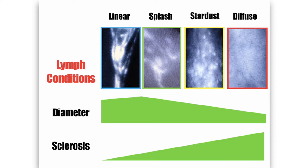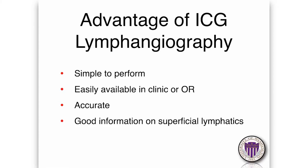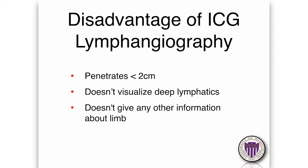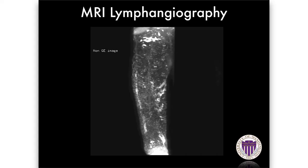These patterns indicate a reduction in the diameter of the lymphatic channels as well as an increase in sclerosis or scarring in the lymphatic channels. If you see somebody with a diffuse pattern, these patients are not going to be candidates for any type of lymphatic bypass, whereas somebody with a linear pattern will be a candidate. The advantages of ICG are that it's very simple to perform, easily available in the clinic or OR, very accurate, and gives good information on the superficial lymphatics. The disadvantage is that it only penetrates less than two centimeters, so you don't get visualization of the deeper lymphatics.